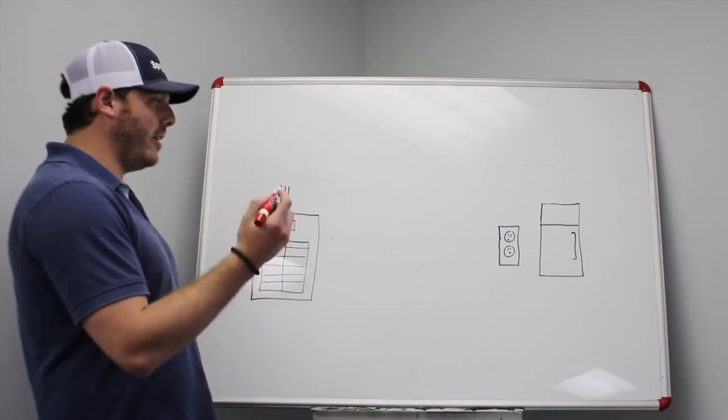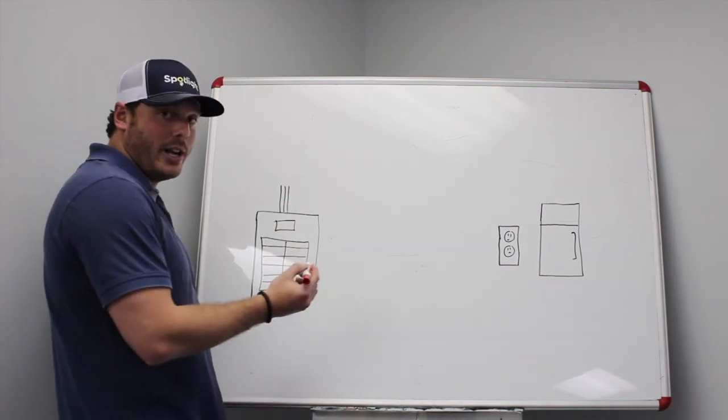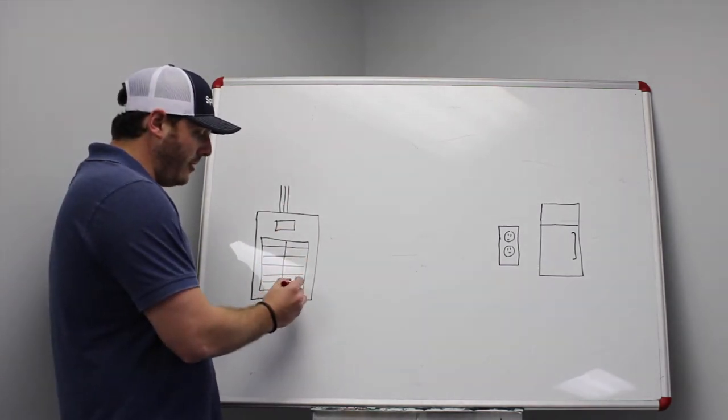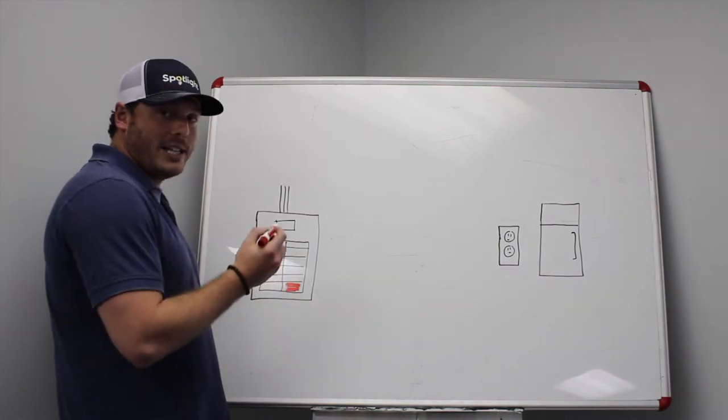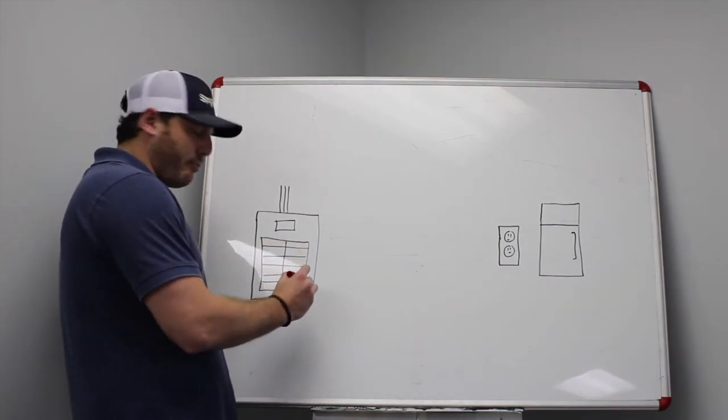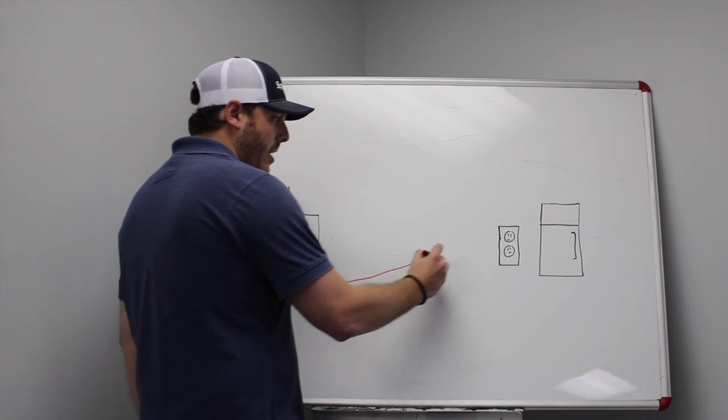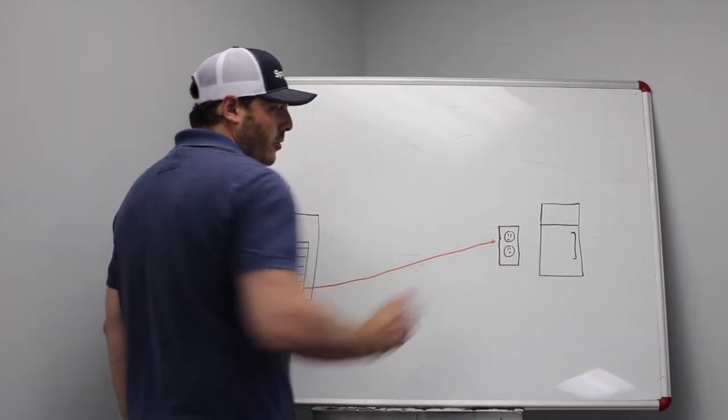So in this situation, what we do is we put in a new breaker in your panel, and we run a dedicated wire from that breaker all the way to where you're looking to utilize a heavier equipment or appliance.